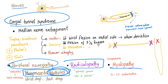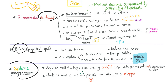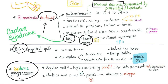Radiculopathy and myelopathy can also occur. Skin problems include rheumatoid nodules, Baker cyst (popliteal cyst), and pyoderma gangrenosum. The type of necrosis in rheumatoid nodules is fibrinoid necrosis because rheumatoid is an autoimmune disease. These nodules are not only seen on the skin — they can also be found in the lung, on heart valves, or on serous membranes.